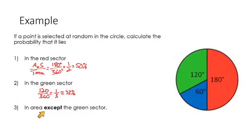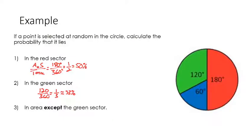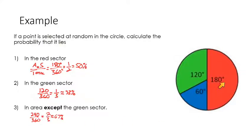Now what about the probability of landing in an area that is not the green sector? You could do 1 minus 33%, since removing the green area leaves everything else. Or you could add the remaining angles: 60 degrees plus 180 degrees equals 240 degrees, so 240 over 360 equals two thirds, or roughly 67%. There's a 67% chance a randomly picked point would fall in either the blue or the red region.